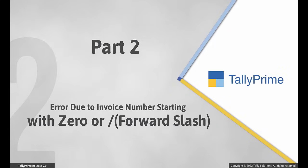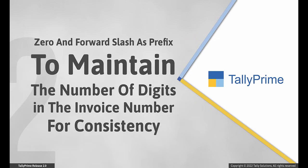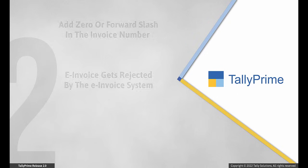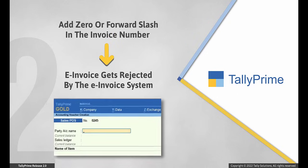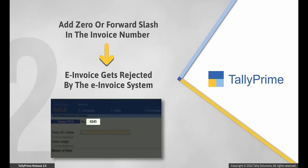Now let us see the error that occurs due to invoice number starting with 0 or forward slash. You may be adding 0 or forward slash as a prefix to maintain the number of digits in the invoice number. For example, you may be entering the invoice number as 0245. In such a case, you can enter all other details and try to generate an e-invoice, but it will be rejected by the e-invoice system.